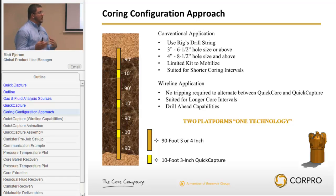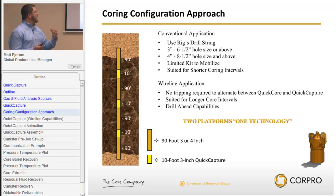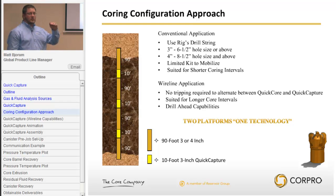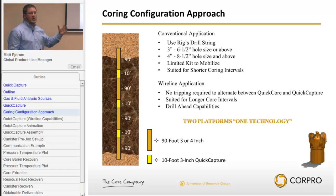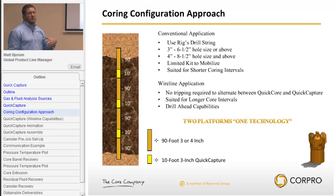The conventional method is suited for shorter coring intervals or long drill breaks in between coring intervals. If you're only looking at, say, two 120-foot coring intervals spread out over 300 meters or 1,000 feet, it makes the case for the conventional application.